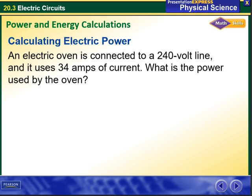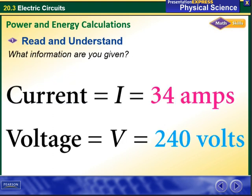Then we have examples such as an electric oven is connected to a 240 volt line and it uses 34 amps of current. What is the power used by the oven? So what information is given: current is given and voltage is given. Current is 34 amps and the voltage is 240 volts.